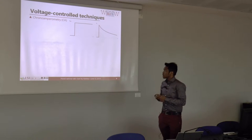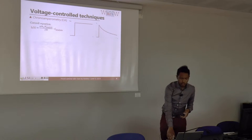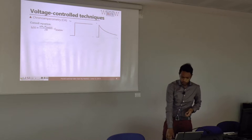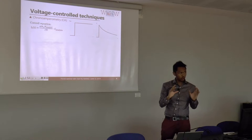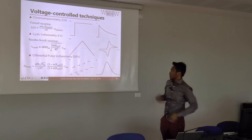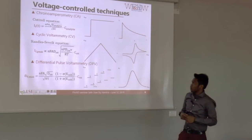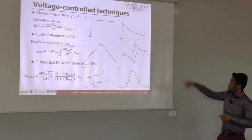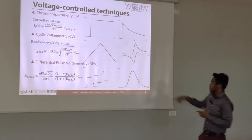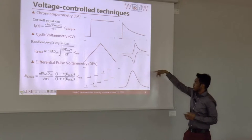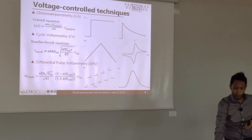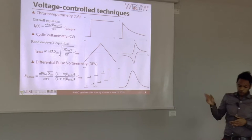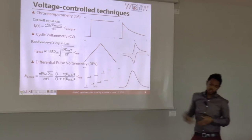Depending on the potential E-cell applied, we can get different current responses. For chronoamperometry, we apply a steady potential and measure how the current decays or increases, making a correspondence between faradaic current and analyte concentration. For cyclic voltammetry, we sweep the potential and measure the current — the voltammogram shows the current vs. cell potential, revealing a peak current at the redox potential of the compound. For differential pulse voltammetry, a differential technique, we measure the current before and after applying pulses, obtaining a bell-shaped curve related to analyte concentration.